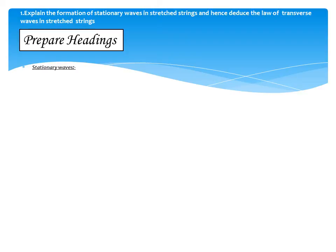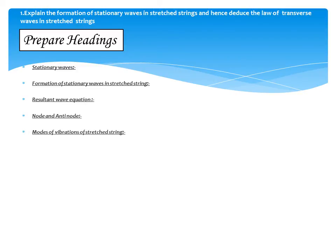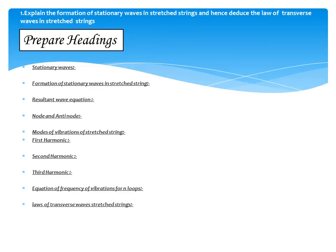The next step is prepare headings. Stationary waves — first heading. Second heading: formation of stationary waves in stretched strings. Third heading: resultant wave equation. Define the nodes and antinodes. Modes of vibration of stretched strings. First harmonic, second harmonic, third harmonic. Equation of frequency of vibration of n loops. Law of transverse waves in stretched strings — first law, second law, third law.